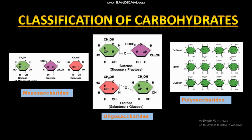Monosaccharides are further subdivided into two types — aldoses and ketoses. When the functional group of a monosaccharide is an aldehyde, it is known as an aldose; when the functional group is a ketone, it is known as a ketose. Polysaccharides are further subdivided into homopolysaccharides, where all sugar units are the same, and heteropolysaccharides, where the sugar units are different from each other.